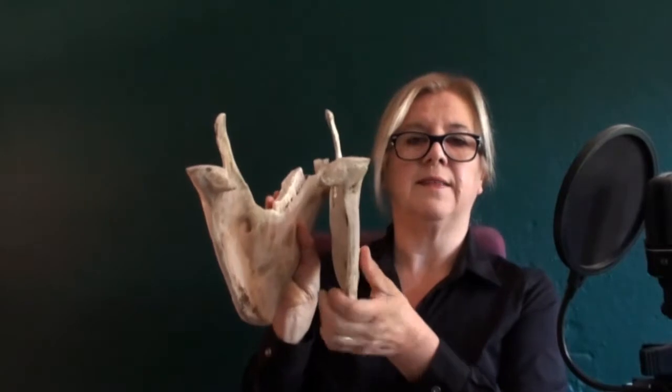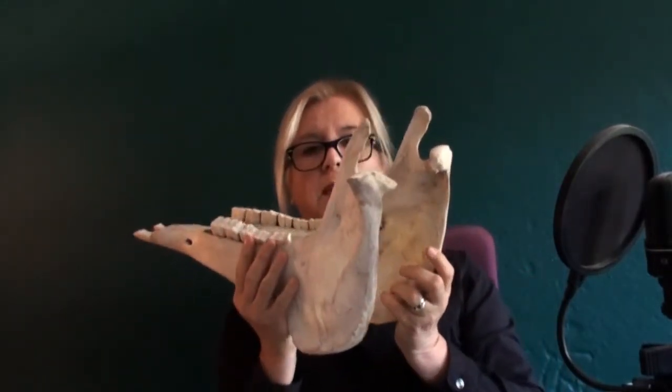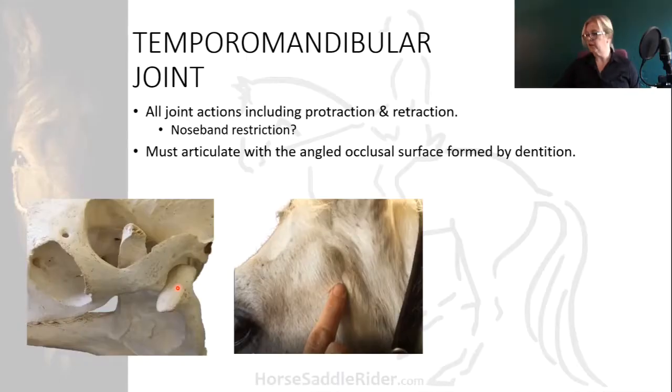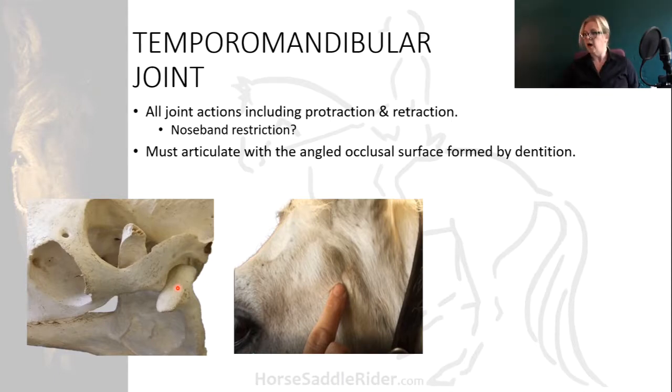The surface is substantial and must articulate with the angled occlusal surface formed by the dentition. So you have a triangular chewing pattern which articulates on an ellipsoid or rounded surface.